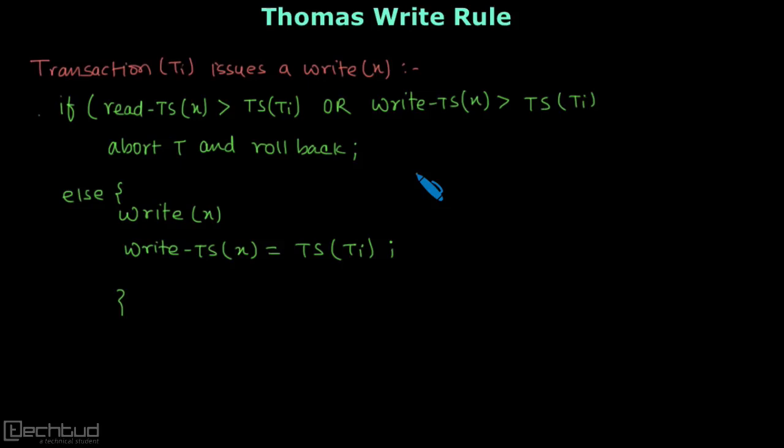Hello everyone, welcome to tech2.com. So far we have understood what is timestamp ordering and what is timestamp itself, and we have learned what is basic timestamp ordering protocol. In basic timestamp ordering we have seen that it enforces conflict serializability, but that is not the actual requirement. Sometimes we can achieve concurrency with view serializability.